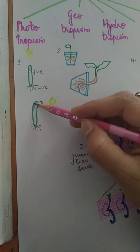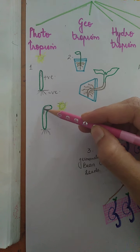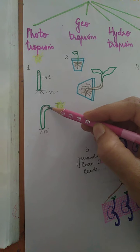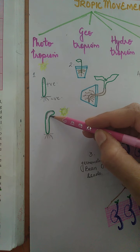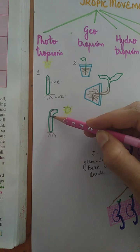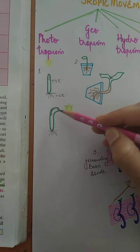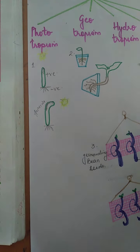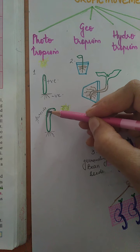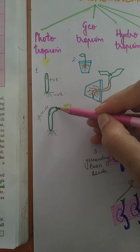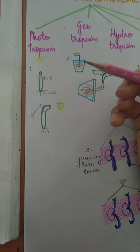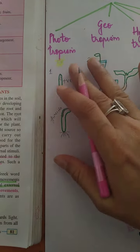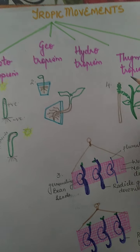When auxins concentrate on the shaded side, the cells there start elongating. These elongated cells cause the shoot to bend. The growth on the side facing the light is less, while on the shaded side, auxin concentration is more, causing that region to grow more. This is why the plant bends towards the sun — it looks like the sunflower has bent towards the sun. This is about phototropism.